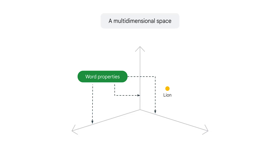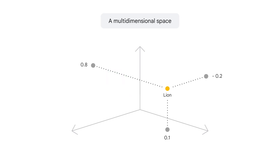A vector embedding is a way to convert something like a word, sentence, or even an image into a list of numbers, or a vector. This vector is like a point in a multi-dimensional space, and they're designed so that the distance and the direction between them capture the semantic relationships. This allows AI models to understand concepts like similarity, analogy, and context.